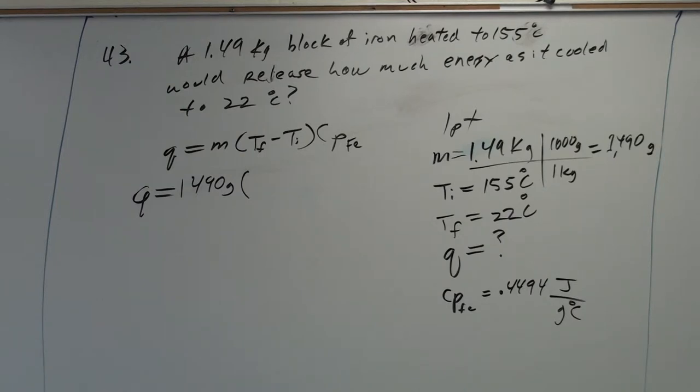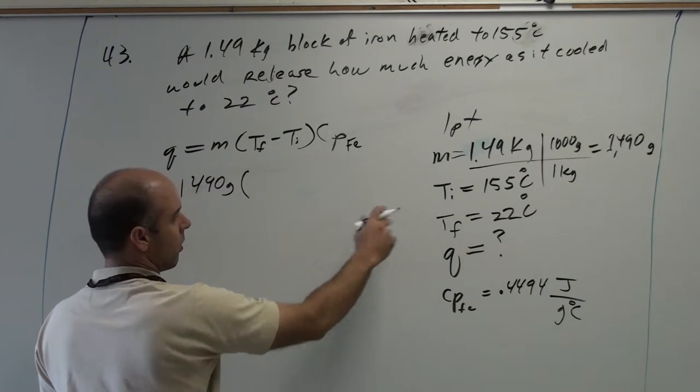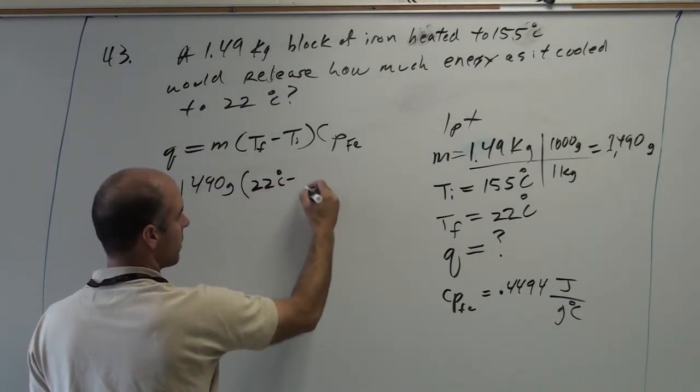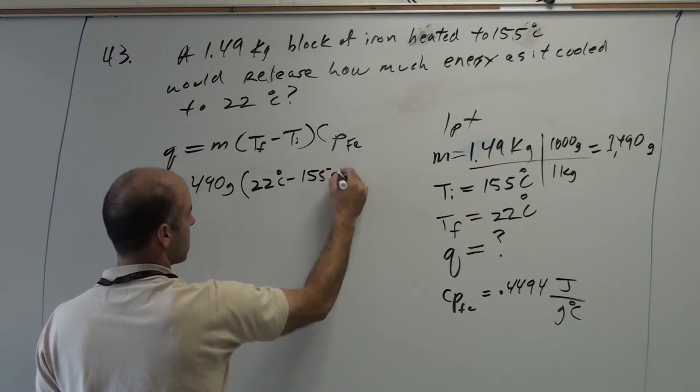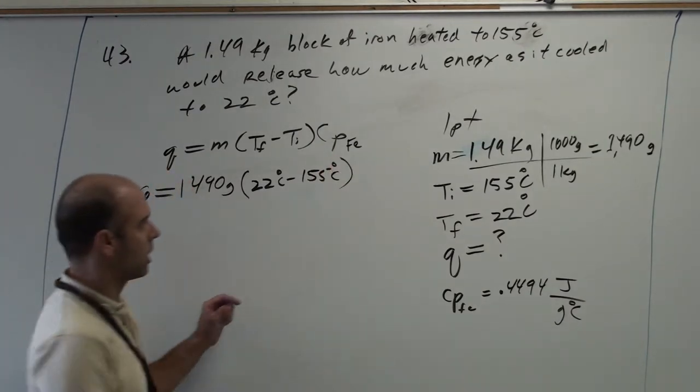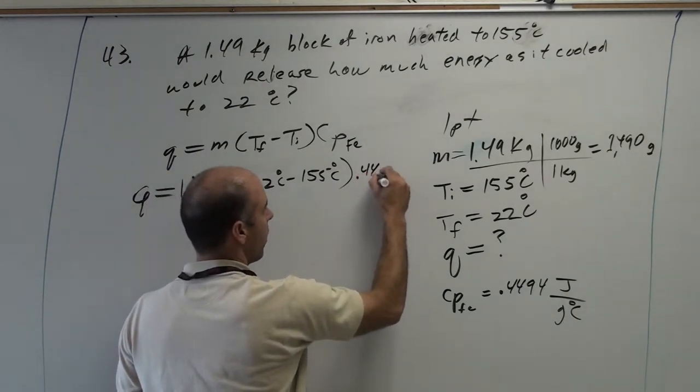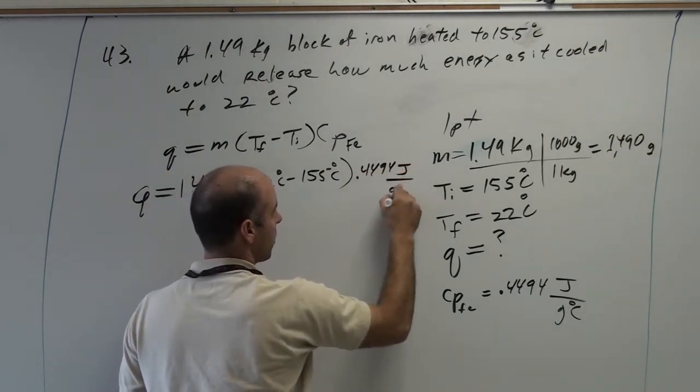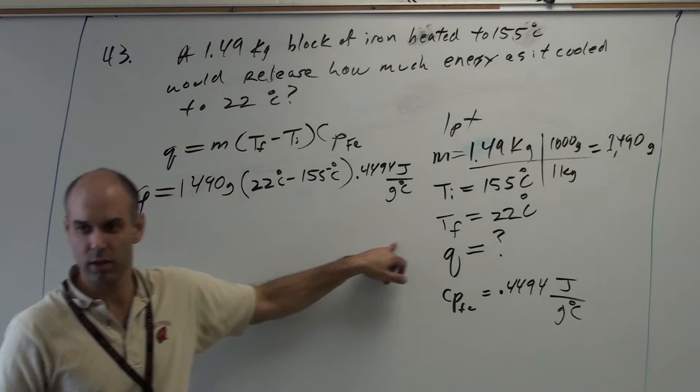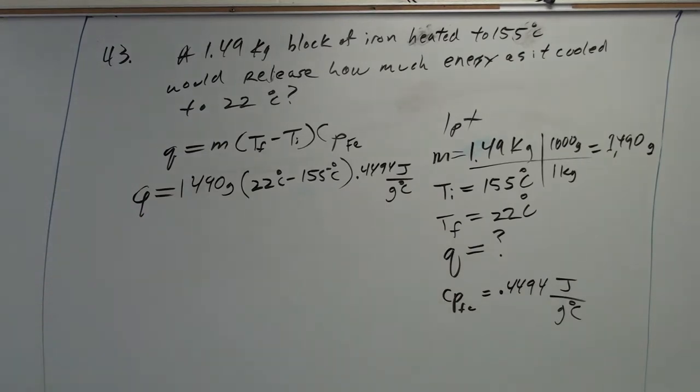T final minus T initial. So, twenty-two Celsius minus 155 Celsius times the specific heat, which is 0.4494 joules per gram degree Celsius. Of course, we put units on all of our numbers. To do otherwise would just be silly.